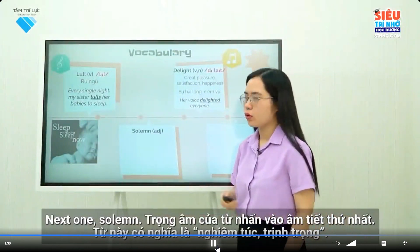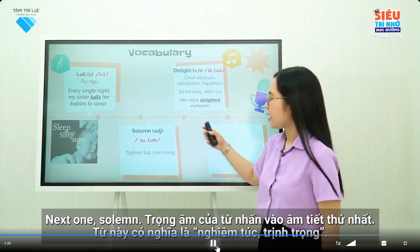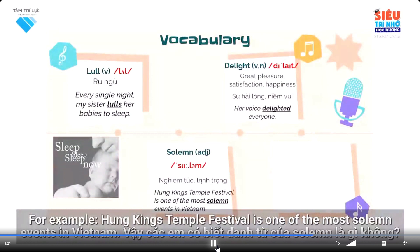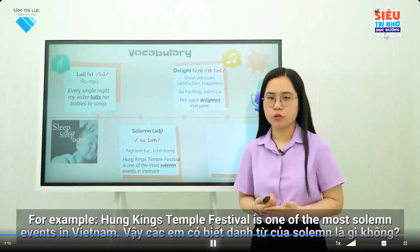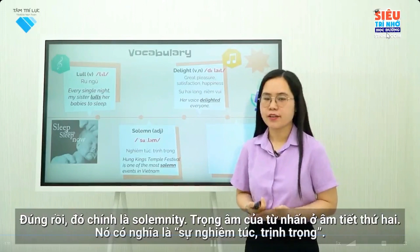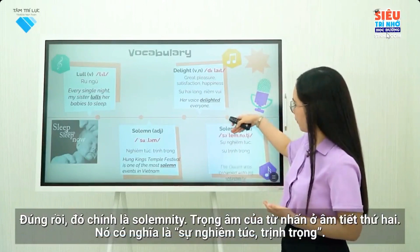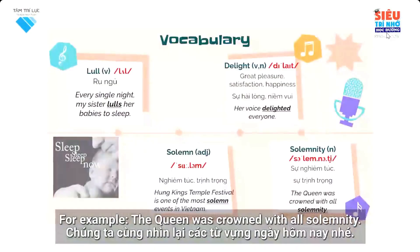Next: Solemn. The word stress is on the first syllable. This word means 'nghiêm trang, trịnh trọng.' For example: Hung King's Temple Festival is one of the most solemn events in Vietnam. So do you know what the noun of solemn is? That's right — it's solemnity. The word is stressed on the second syllable. It means 'sự nghiêm trang, sự trịnh trọng.' For example: the queen was crowned with all solemnity.